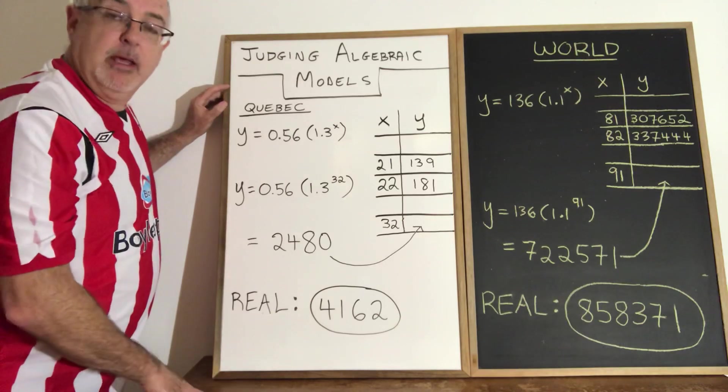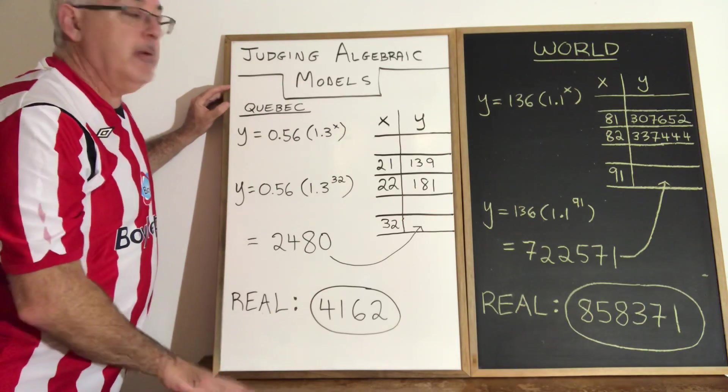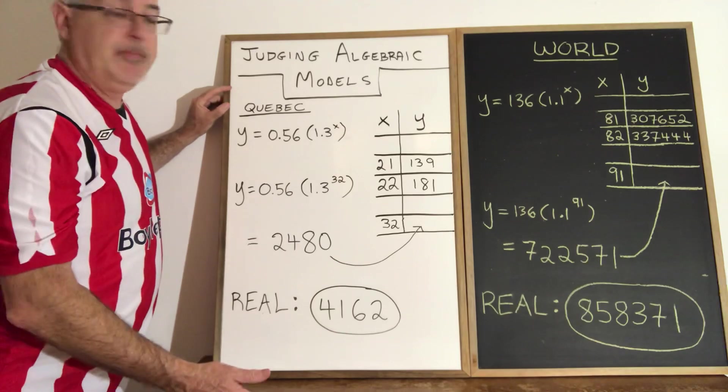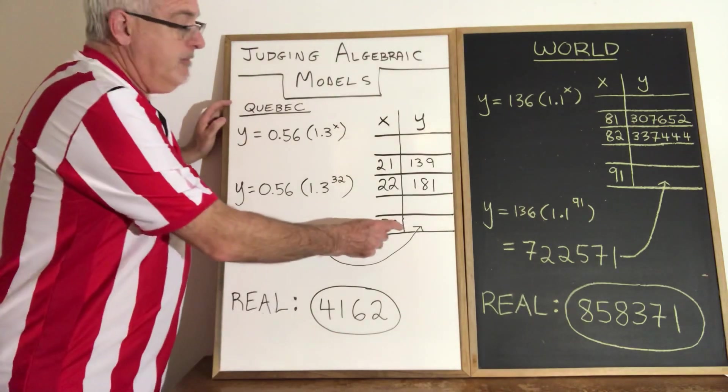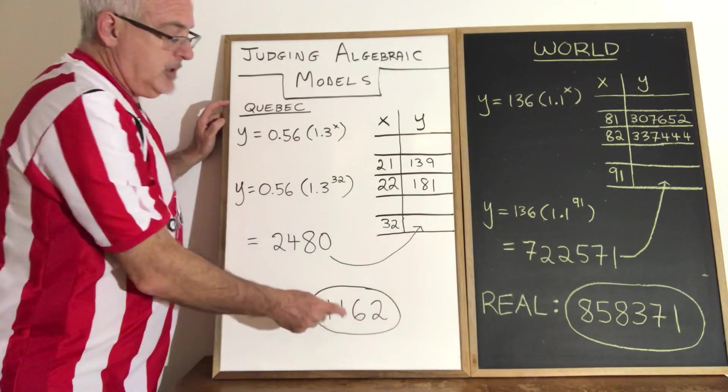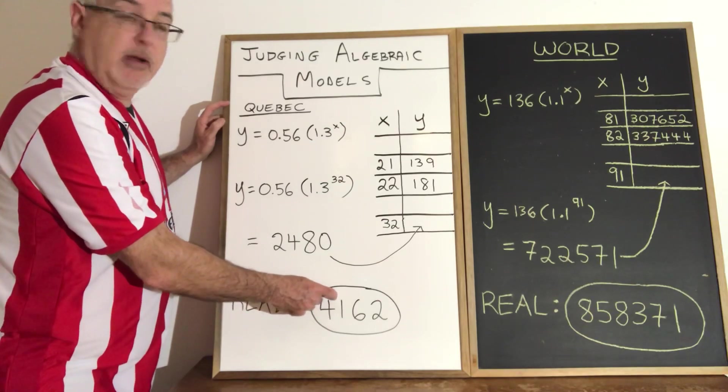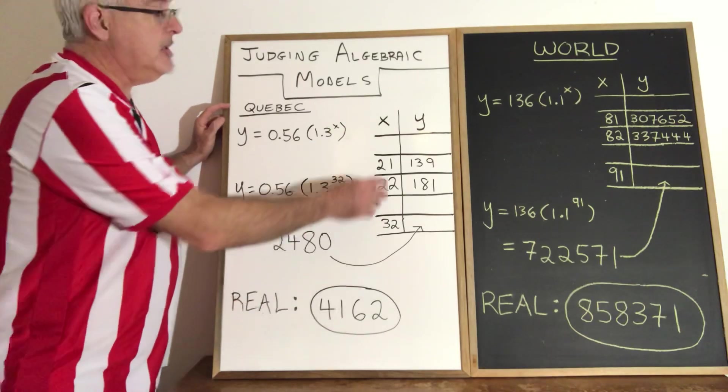Instead of only reporting confirmed cases, they were reporting confirmed and probable cases together as a lump sum. So the process that produced the real value as reported by the government was different from the process that produced these two values that I used to make the equation.